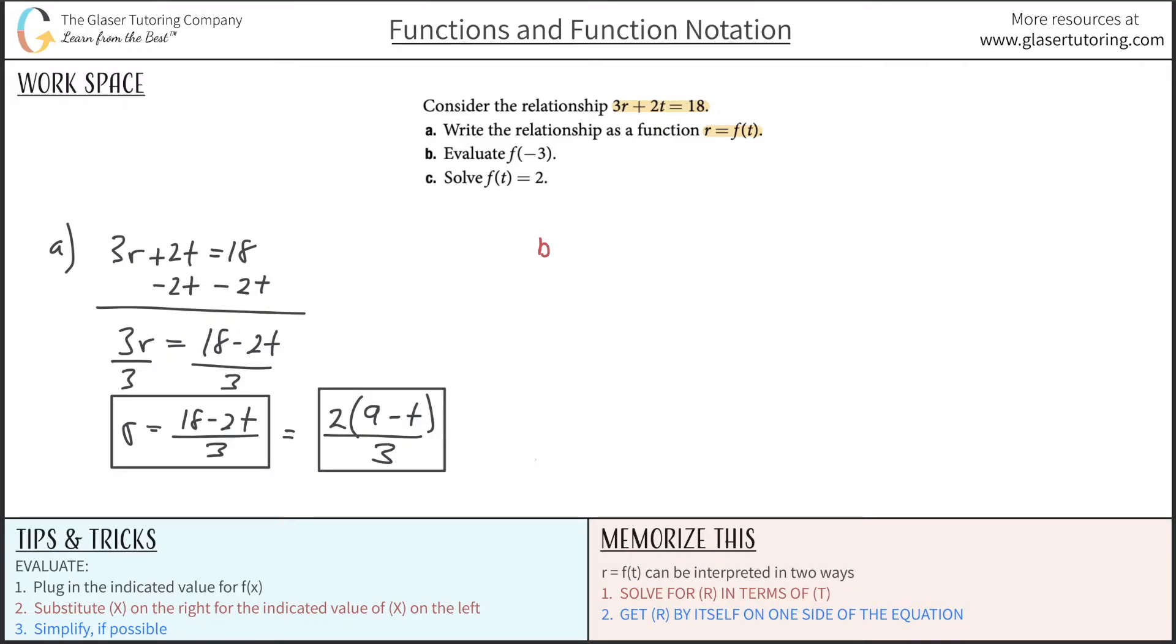Let's take a look at now letter b. So letter b says to evaluate f of negative 3. In terms of our equation, I'm going to use r is equal to 18 minus 2t all over 3. Now, you might say, evaluate f of negative 3. Basically what I do is I look for f(t), because there's no x in the problem, it's just t this time. But we don't have f(t) in here, we just have t. But no big deal.